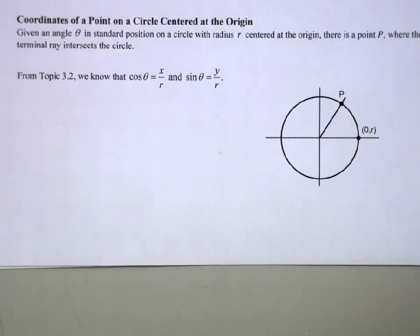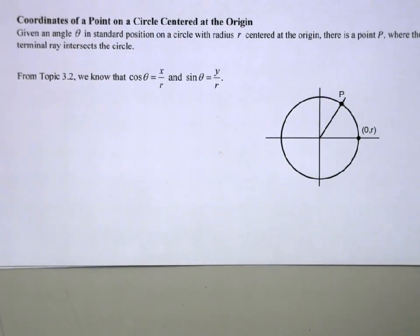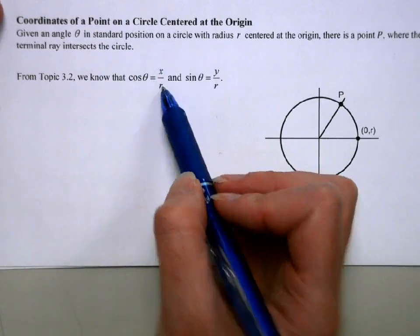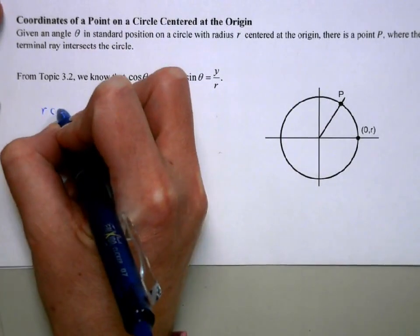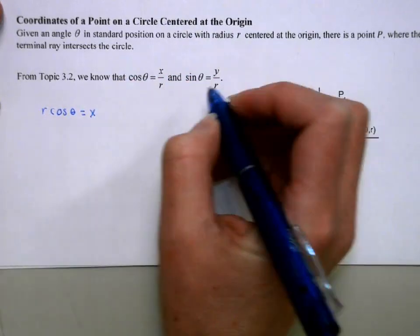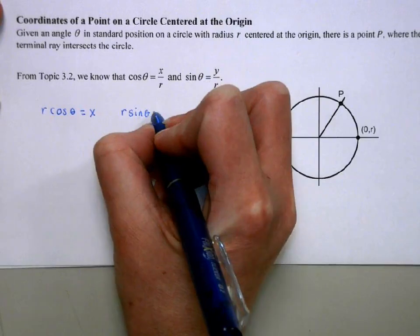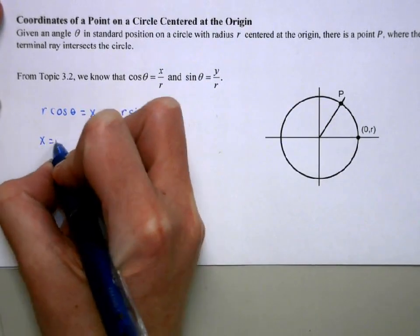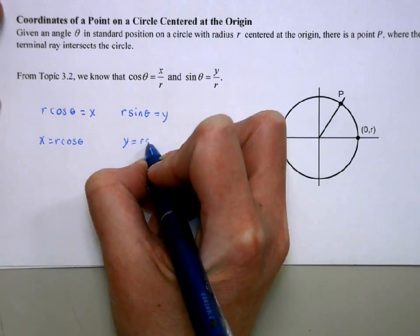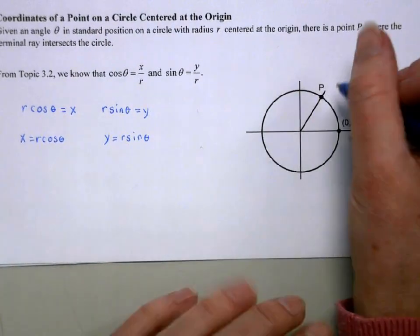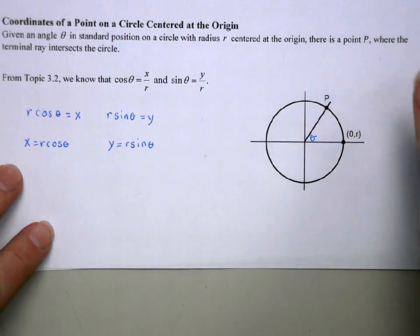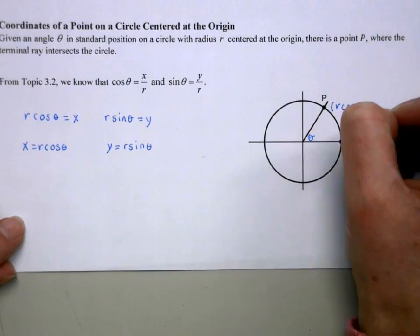If we are given an angle in standard position and a radius r, we can find the coordinates using sine and cosine. We know cosine θ = x/r and sine θ = y/r. Rearranging gives x = r·cosθ and y = r·sinθ. So the coordinates of a point at angle θ on a circle of radius r are (r·cosθ, r·sinθ).